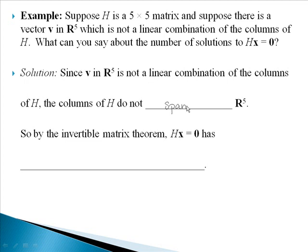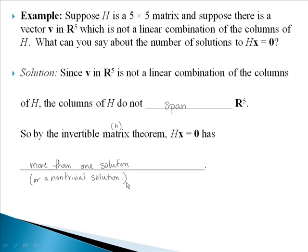Because that's the definition of span — if they spanned R5, then V would be a linear combination of the columns. So by the Invertible Matrix Theorem, part H, which says the columns must span Rn, since they don't, we know that our homogeneous equation is going to have more than one solution, or a non-trivial solution.